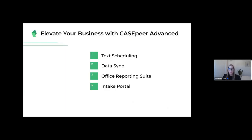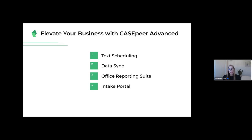The four features of Case Peer's Advanced tier I'll be talking about today are: text scheduling, which allows you to prep messages in advance and schedule them for any time or date; our nightly data sync, which allows fully customizable reporting and visual dashboards from platforms like Tableau or Power BI — really anything compatible with Amazon Athena; our office reporting suite, which provides valuable insight into metrics across different offices or teams as well as an extra layer of permissions and reporting; and lastly, our intake portal, streamlining intake from potential new client to retained client as quickly as possible.